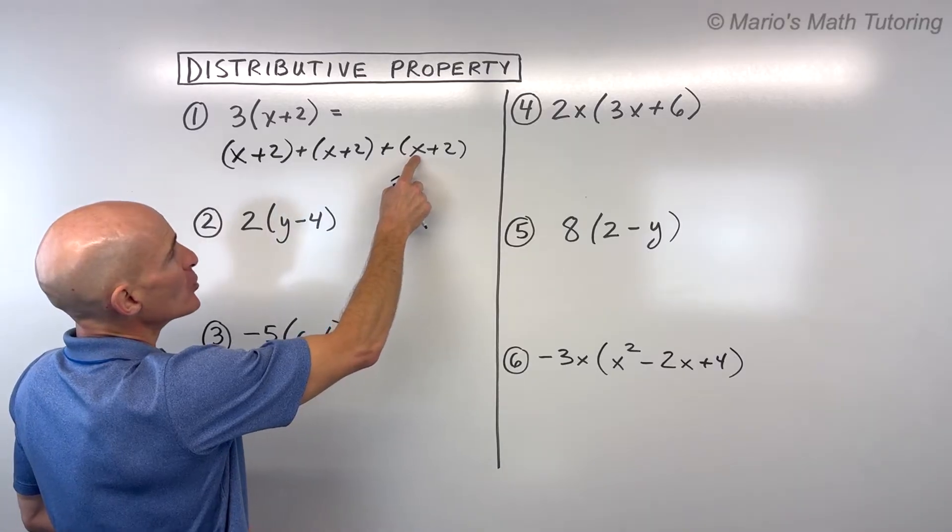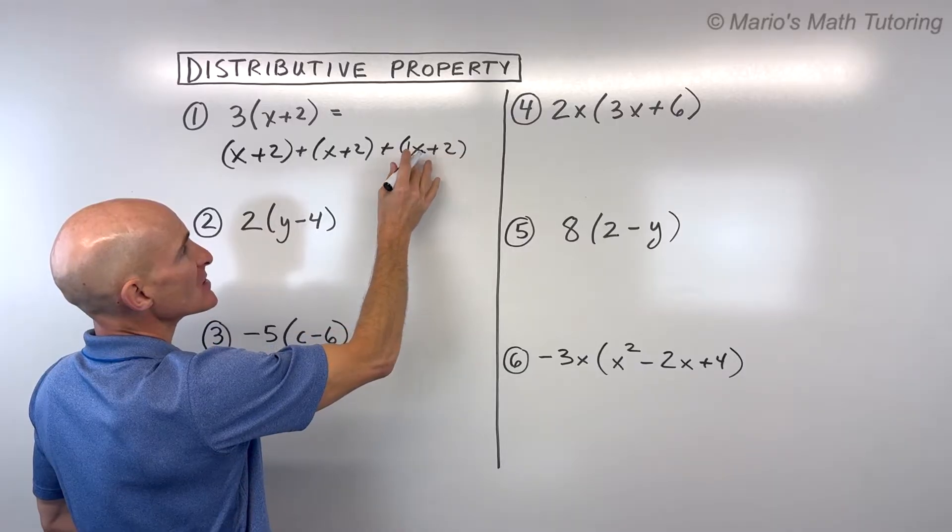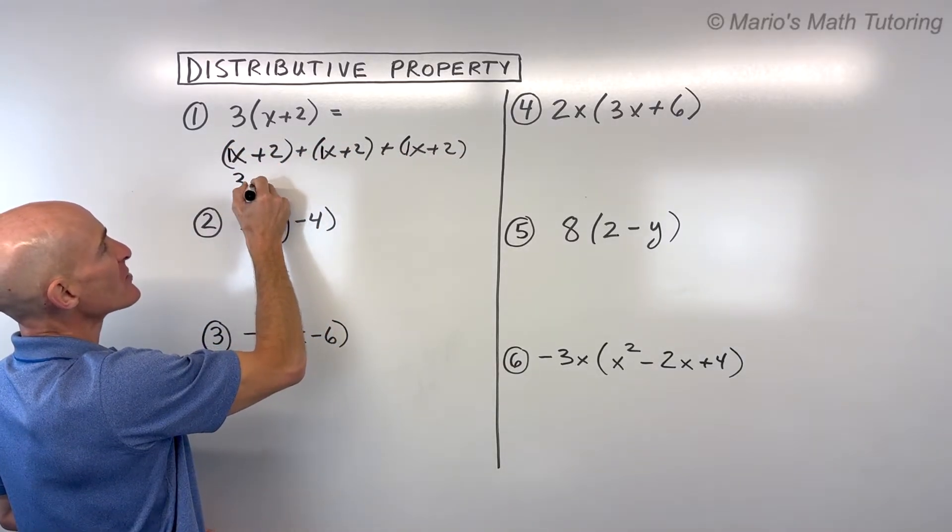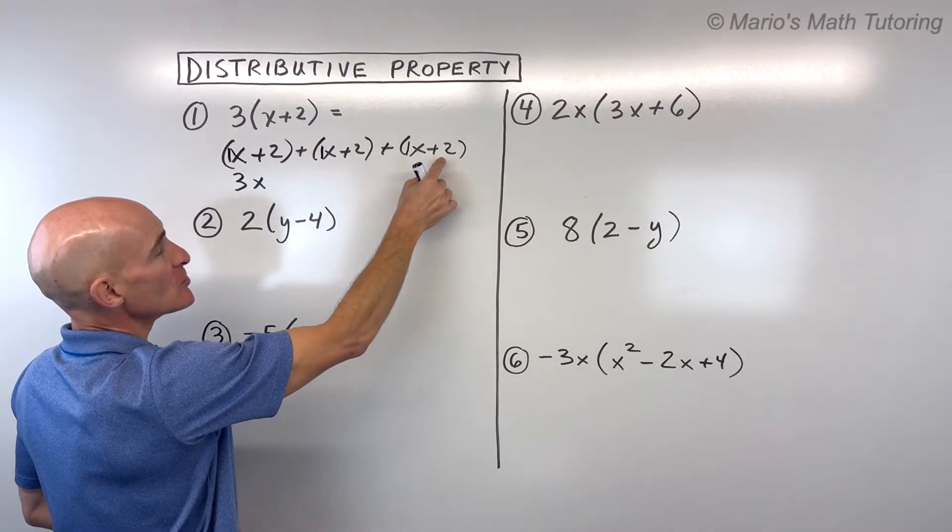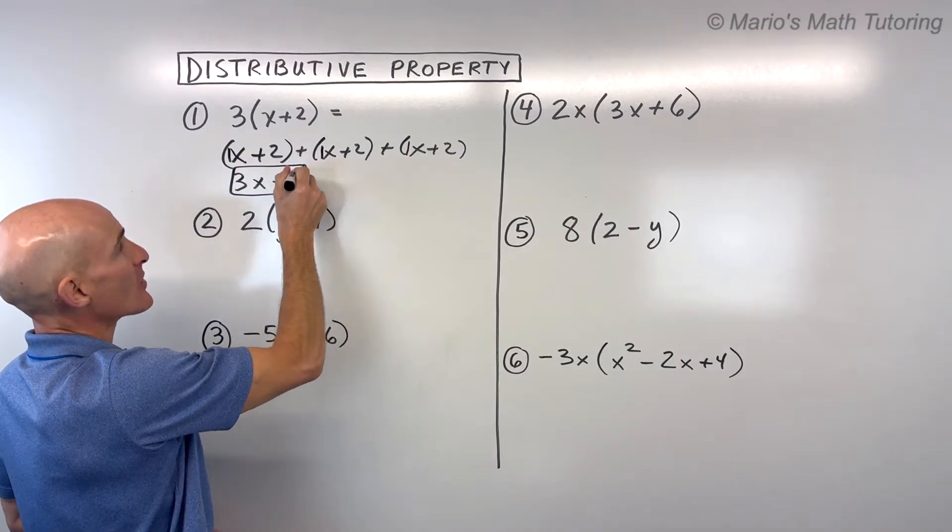Now remember, when you look to the left or just in front of the variable, if there's nothing there, that's understood to be a one. So this is like one x plus one x plus one x, which gives us three x. Two plus two plus two, that's going to be six, so we have 3x + 6, that's our answer. Now, that's a long way to do it.